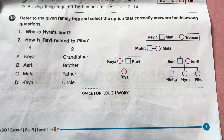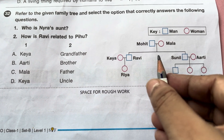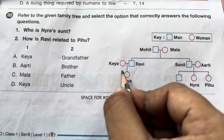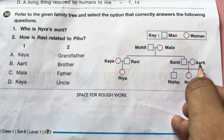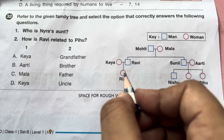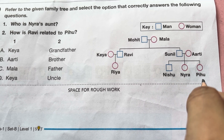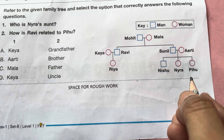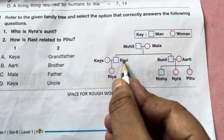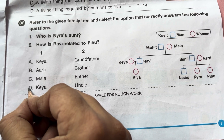Refer to the given family tree. Mohit and Maya's children are Ravi and Sunil. Ravi's wife is Kea; Sunil's wife is Aarti. Ravi and Kea's daughter is Riya. Sunil and Aarti's children are Nishu, Naira, and Pihu. Who is Naira's aunt? Naira's aunt is Kea. How is Ravi related to Pihu? Ravi is Pihu's uncle. So the answer is D: Kea and uncle.